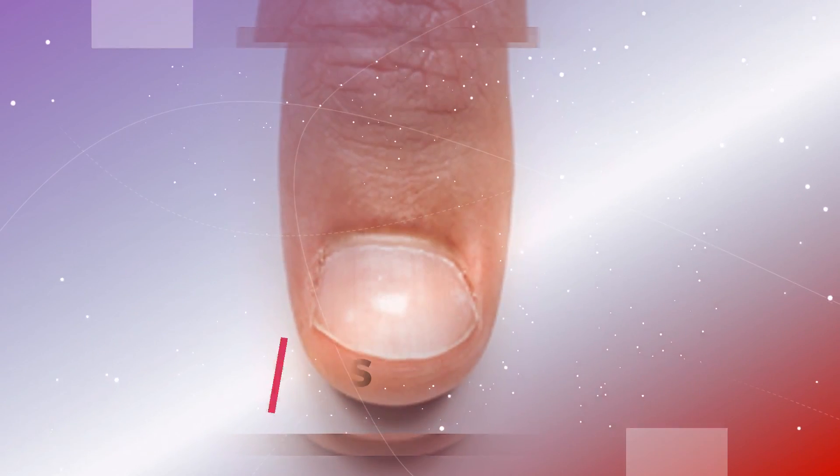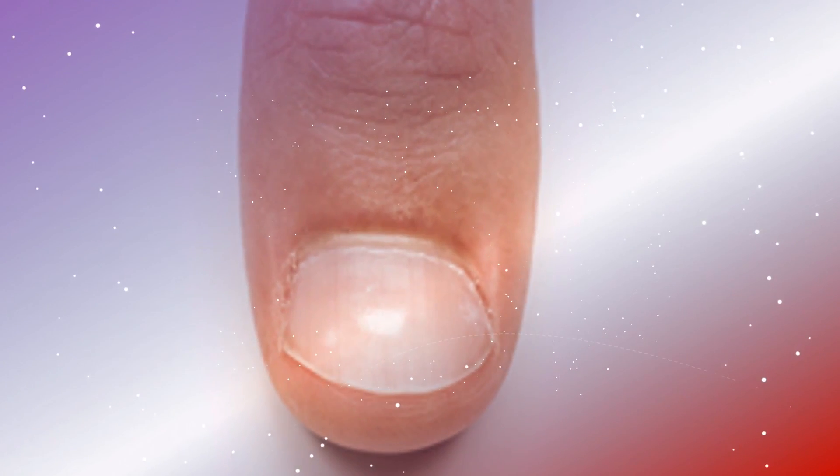2. White Spots. Small white spots on your nails are usually the result of nail trauma. They're not cause for concern and will fade or grow out on their own. Less commonly, white spots that do not go away could be due to a fungal infection.